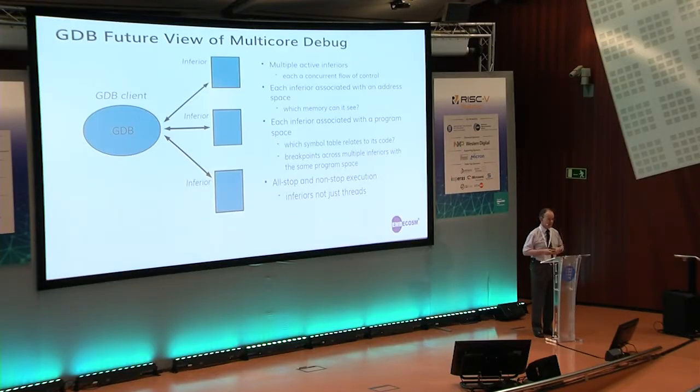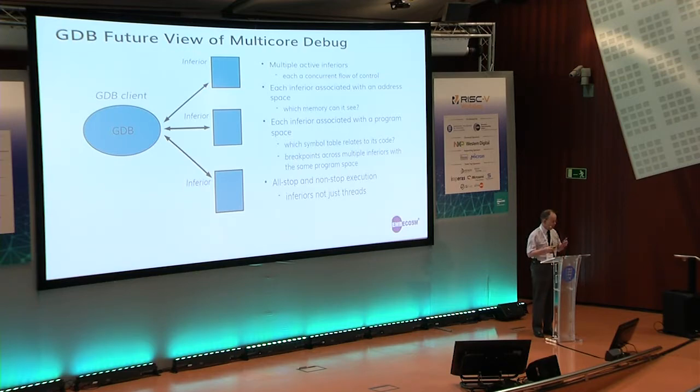Each inferior is also associated with a program space — a symbol table and DWARF debugging information for the code running on that inferior. That means you can set a breakpoint on a function like foo and it will set it at the right location on all cores that have the foo symbol in their program space. When you run, all inferiors run at once, and again you can choose all-stop or non-stop: do you stop all inferiors when you hit a breakpoint, or just some, or just those in the particular program space? There are corner cases when running many parallel cores in sync — they all hit the same breakpoint on the same function at the same time, and you get the first one. Once dealt with, you probably want to release all the other breakpoints at that location.